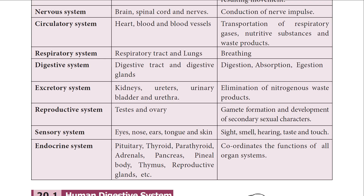The sensory system consists of the eyes, nose, ears, tongue, and skin. They help us understand the senses like sight, smell, hearing, taste, and touch. The endocrine glands consist of the pituitary, thyroid, parathyroid, adrenal, pancreas, pineal body, thymus, and the reproductive glands. They are helpful for coordinating all the functions of our organ systems.